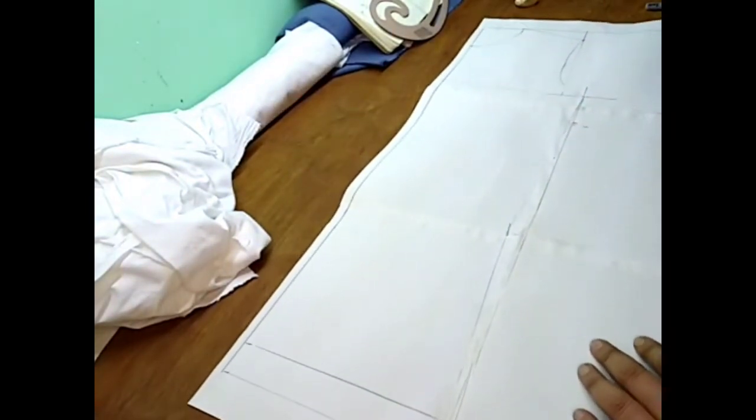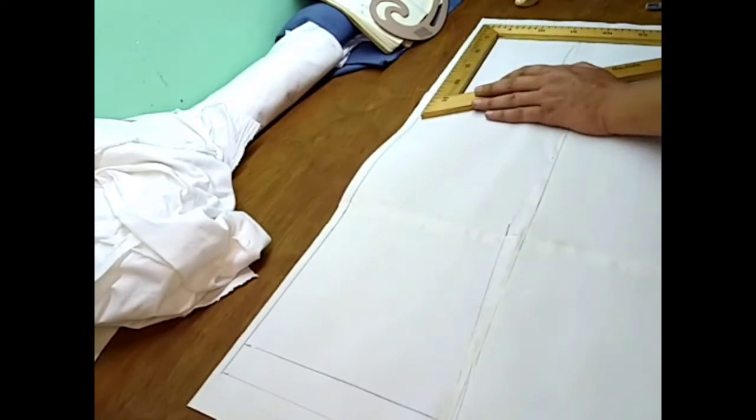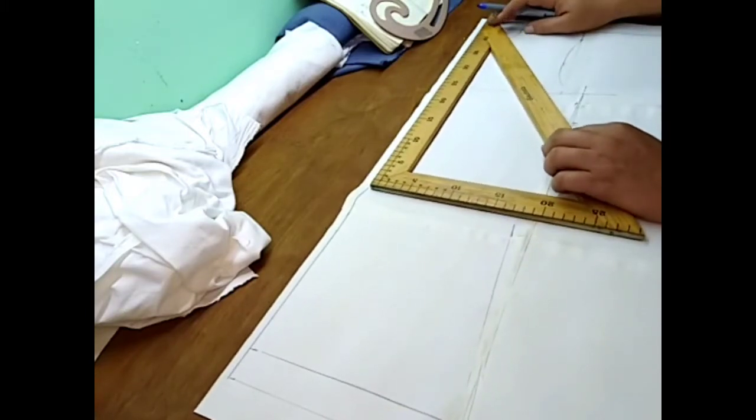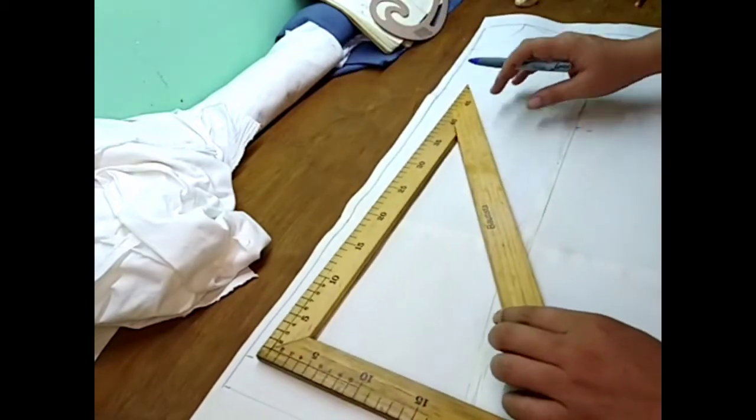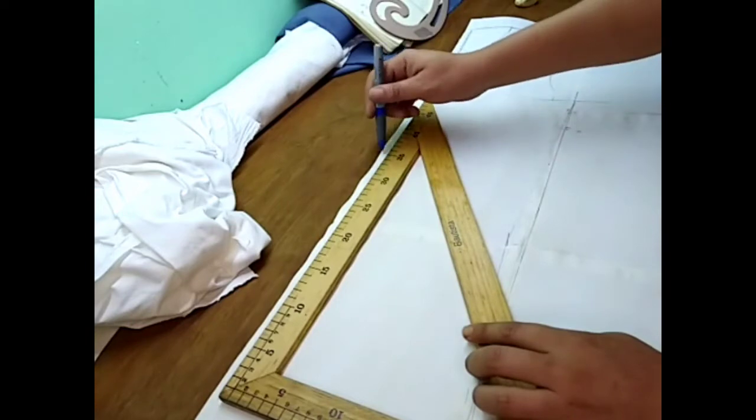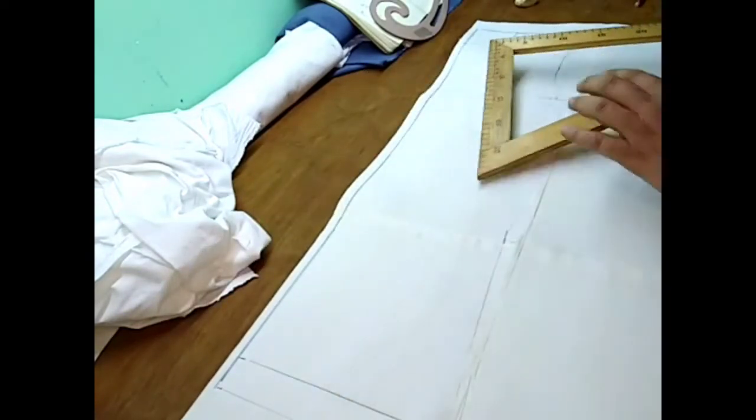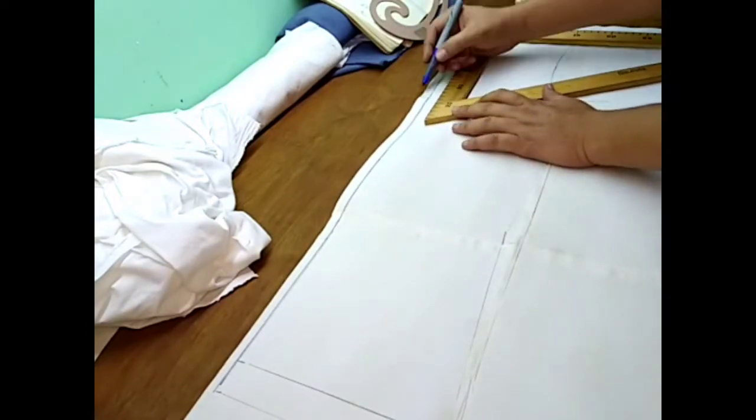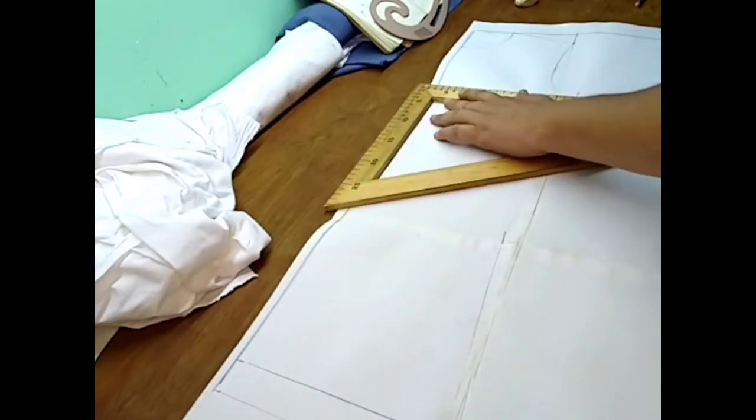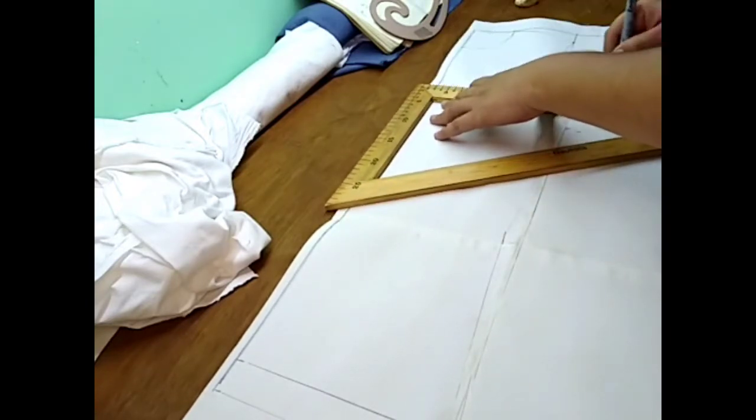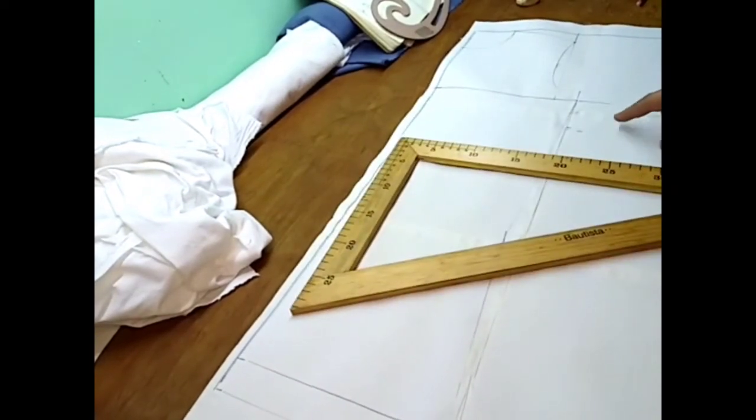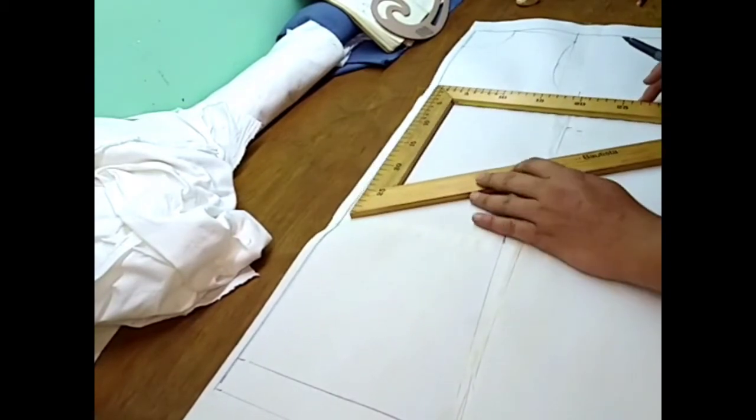Lo que vamos a hacer es escuadrar nuestra tela, nuestro papel perdón. Escuadramos aquí y escuadramos acá. Hacemos unas líneas en donde me permita poner el largo de la camisa y la base o el pecho de mi camisa. Habíamos dicho que vamos a bajar 20 centímetros, esto es para el largo de la sisa. Recuerda que es el cuarto de pecho. Aquí ya tenemos el largo de la sisa.